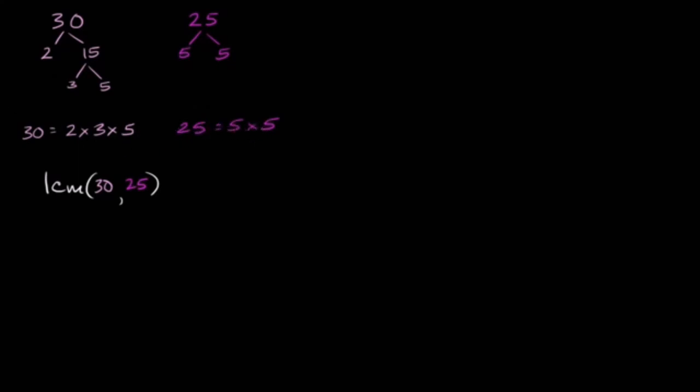So the least common multiple, well, it has to be divisible by 30. So it's going to need a 2 times a 3 times a 5. This is what makes it divisible by 30.